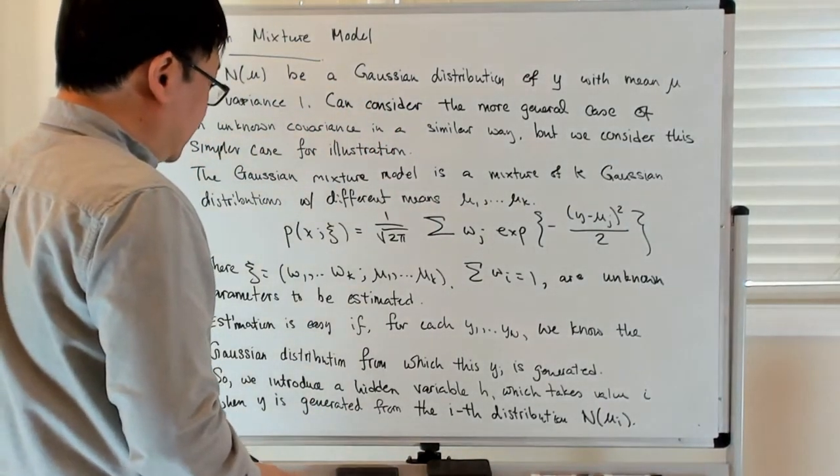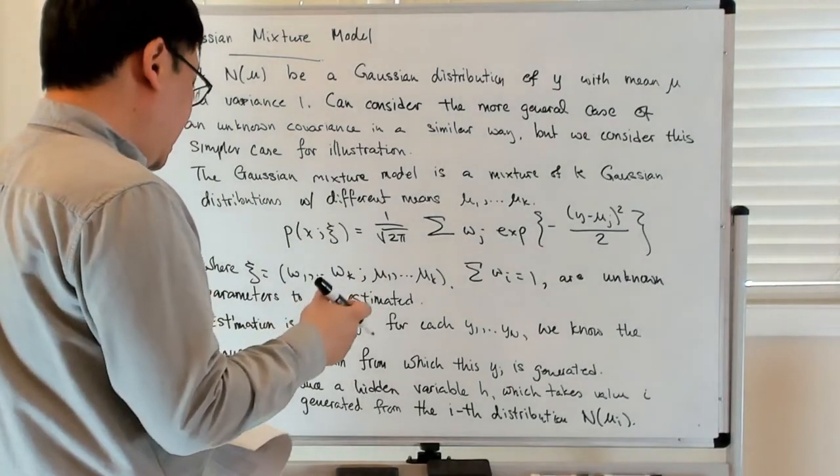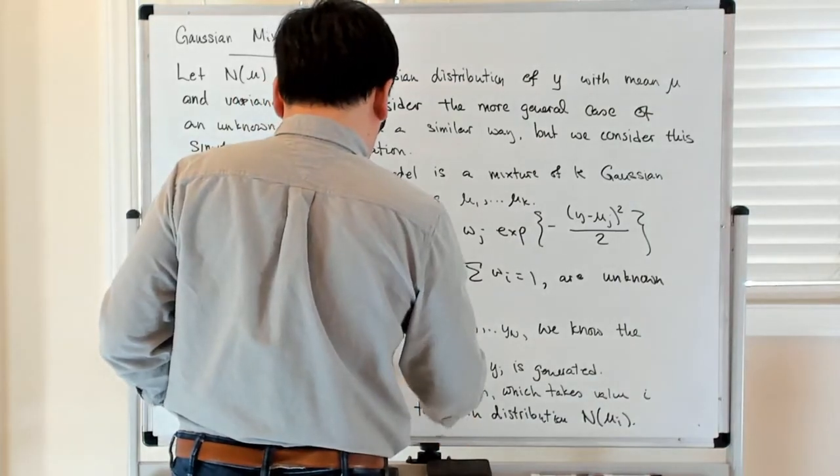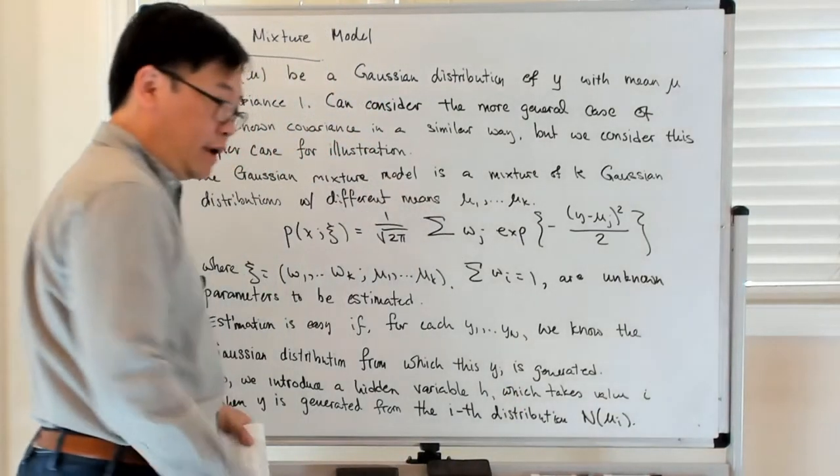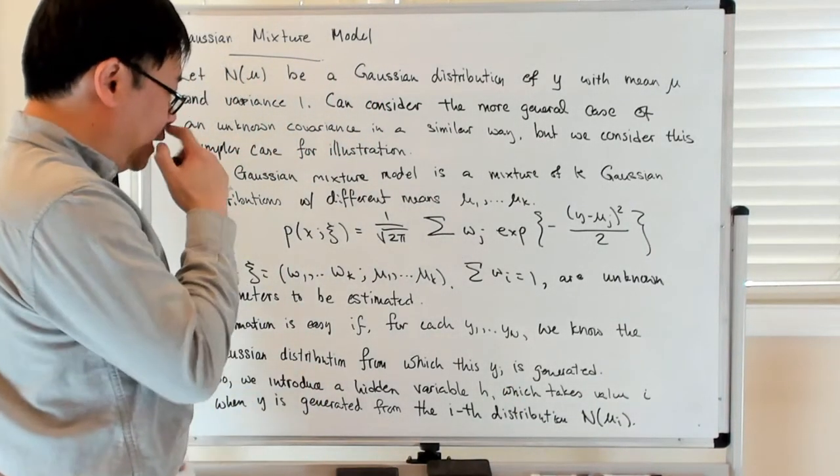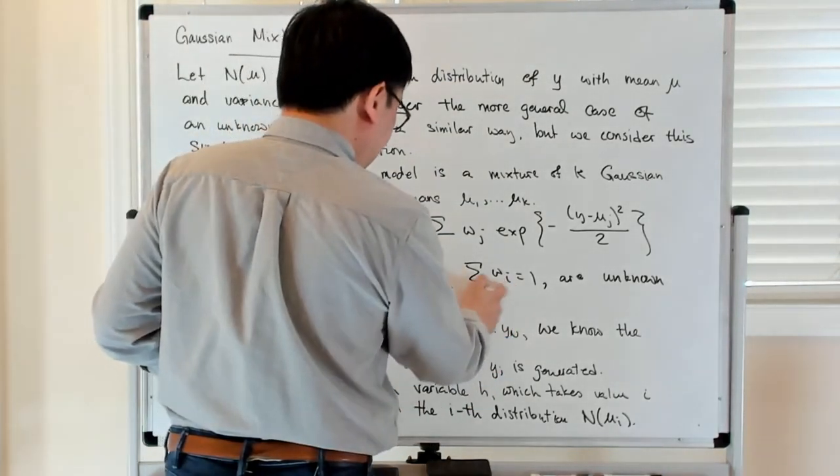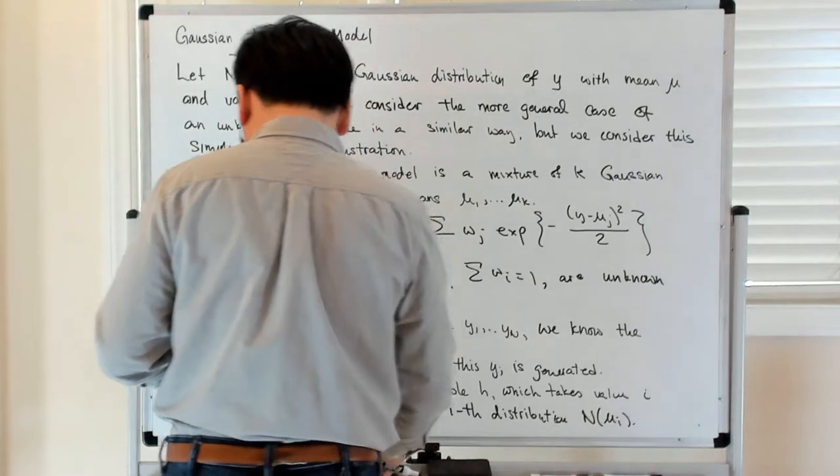So why is that helpful? That's helpful because this hidden variable h is a random variable, and the probability distribution it follows is related to these weights w_i.